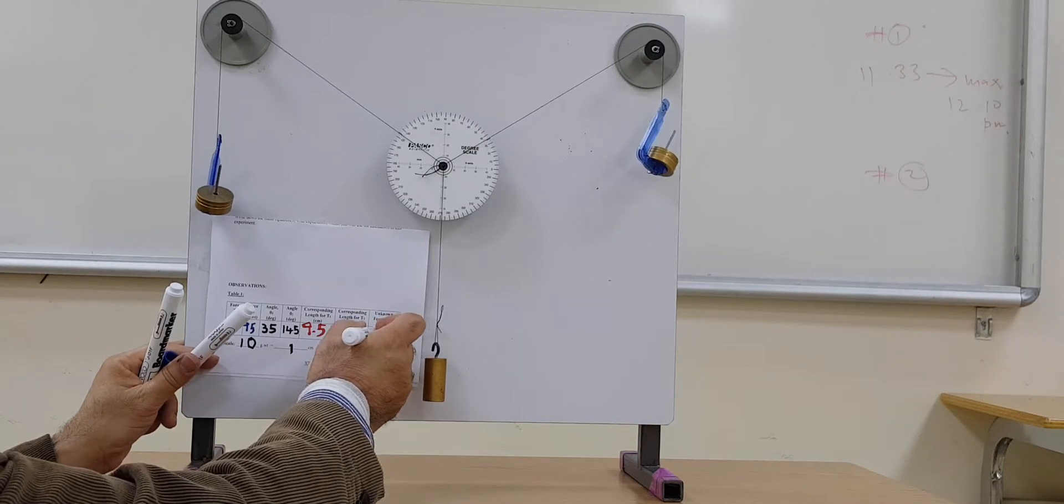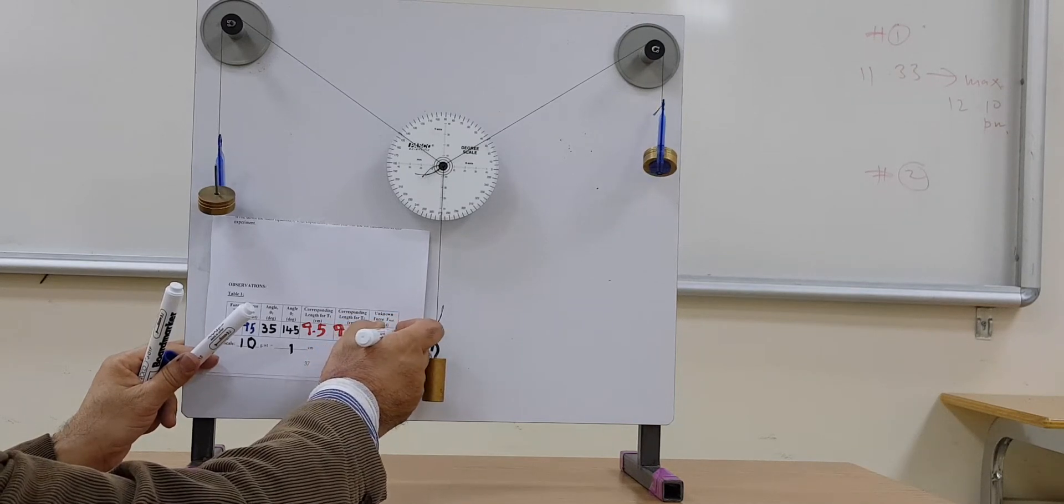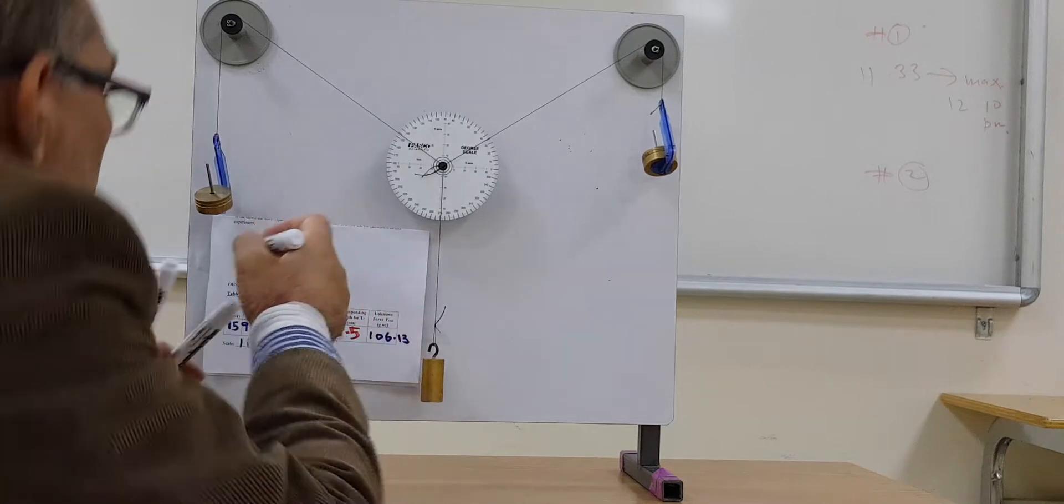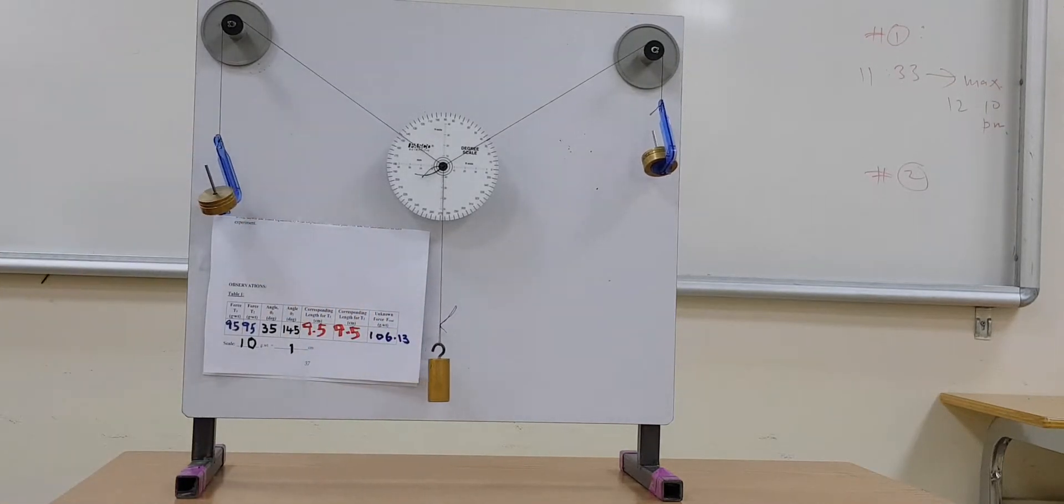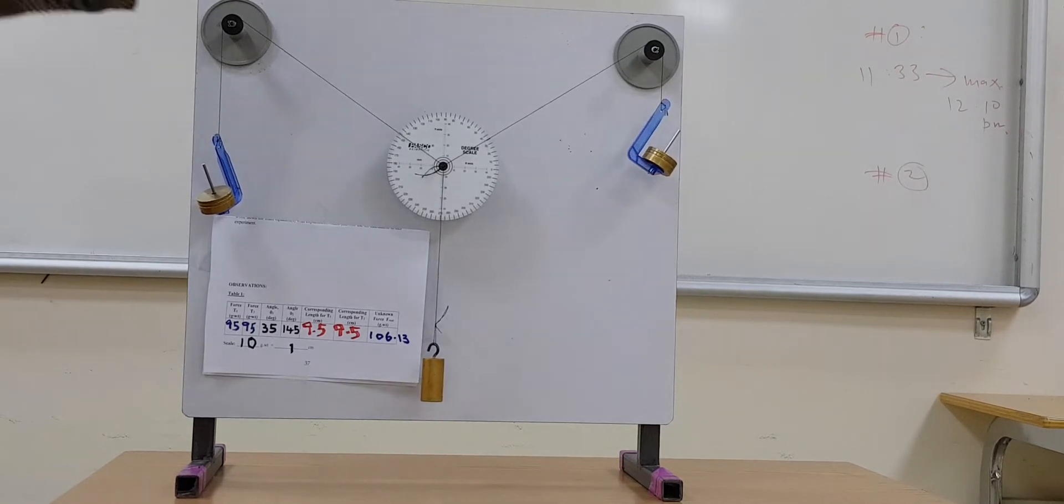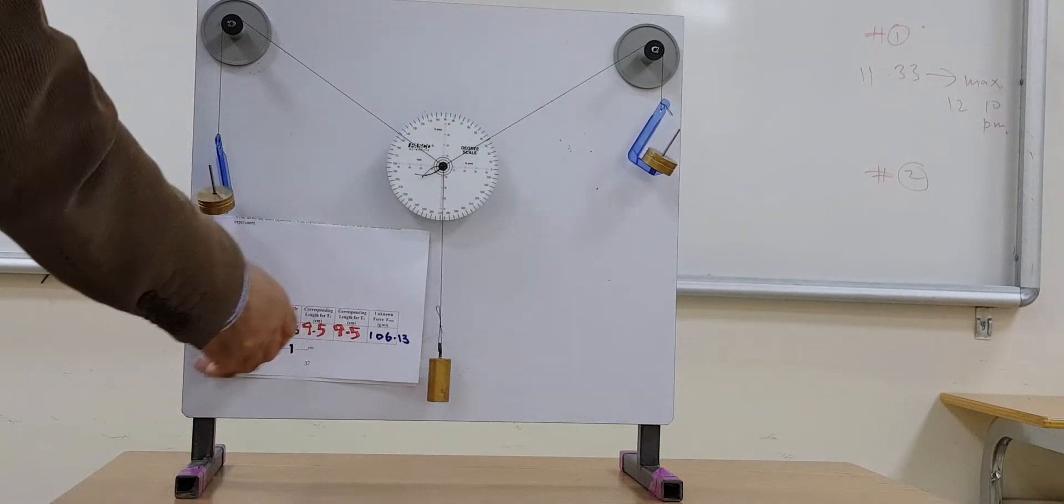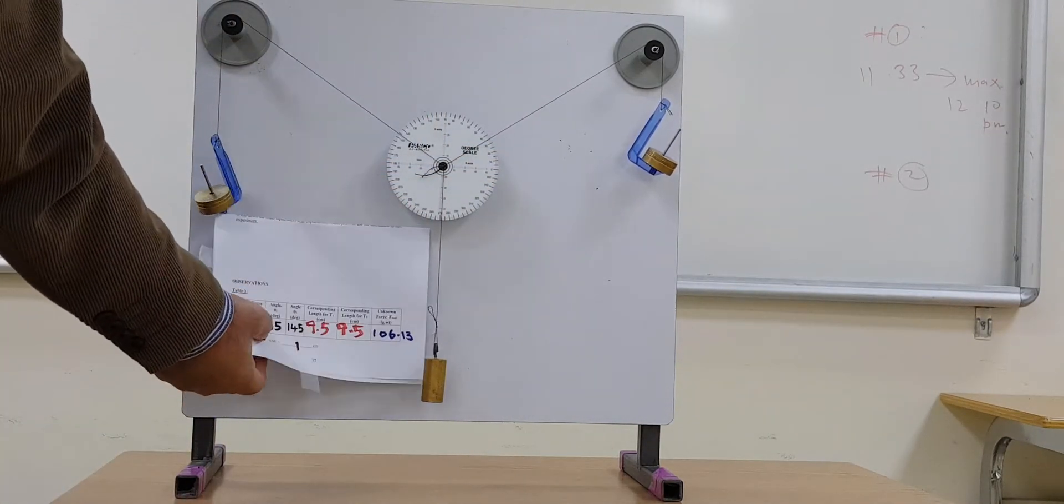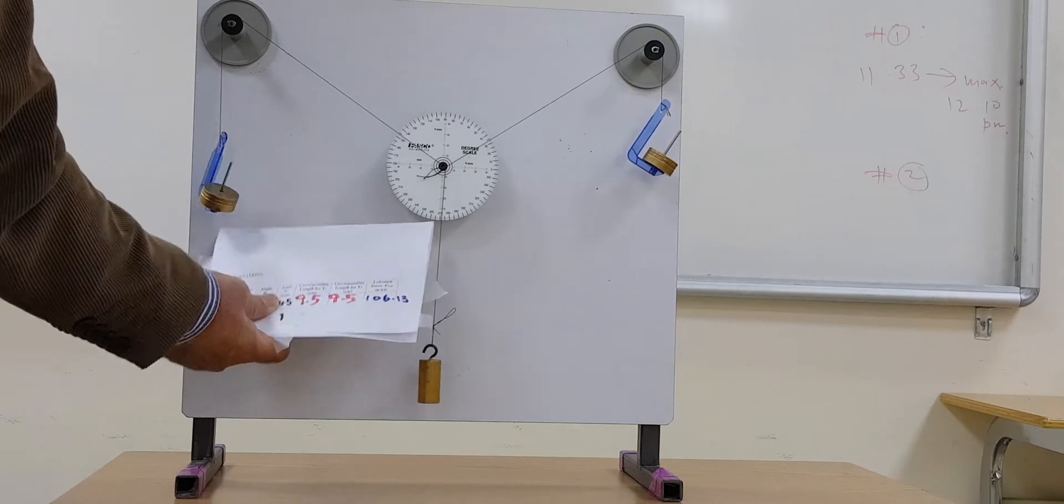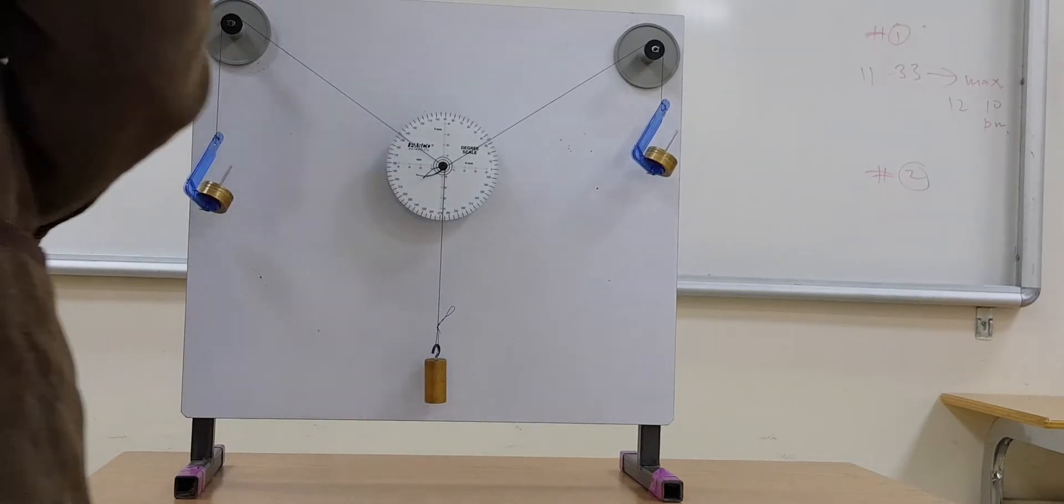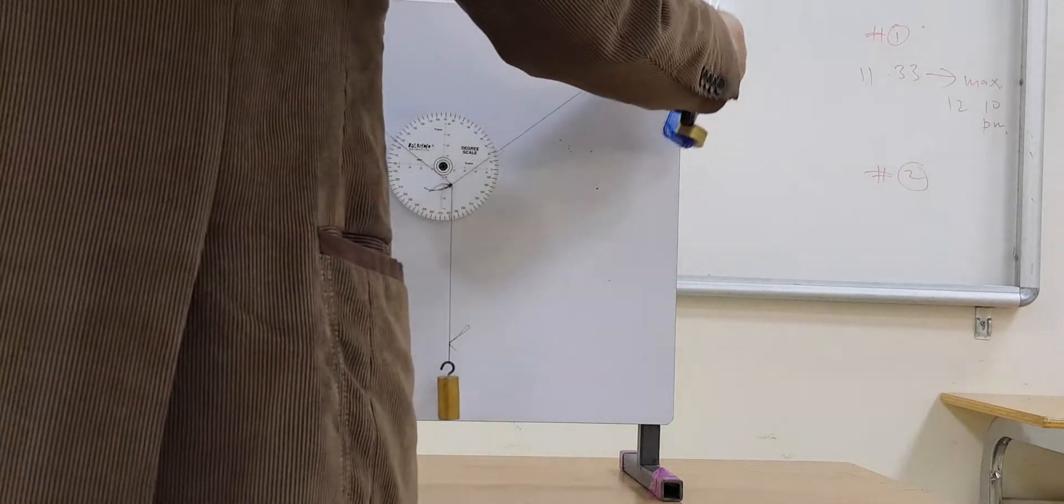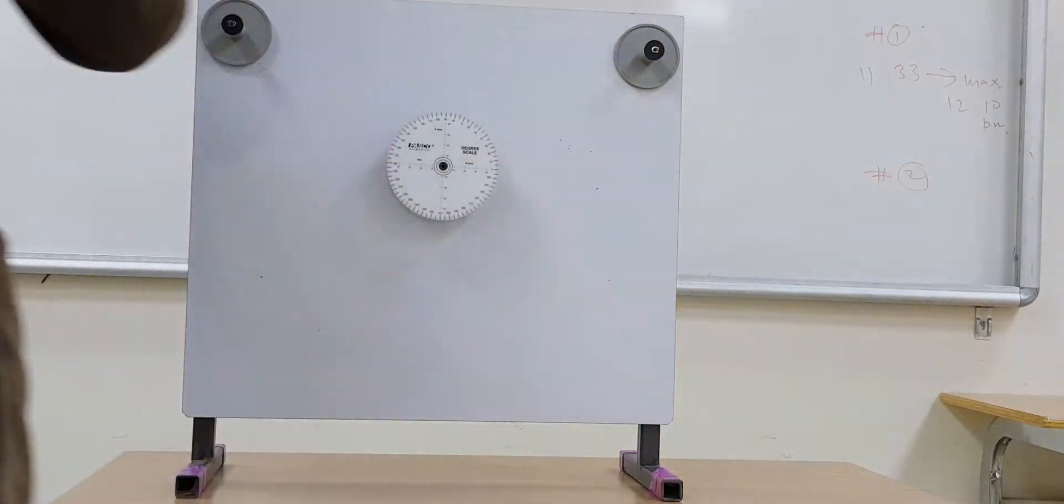And the unknown force I have already measured on the balance is 106.13 grams. This is all the data. Now, once you finish writing down the data, the next step is to draw the graph on the graph paper.